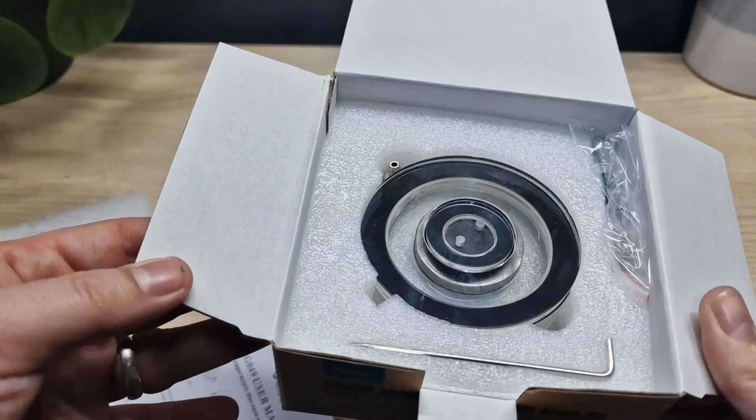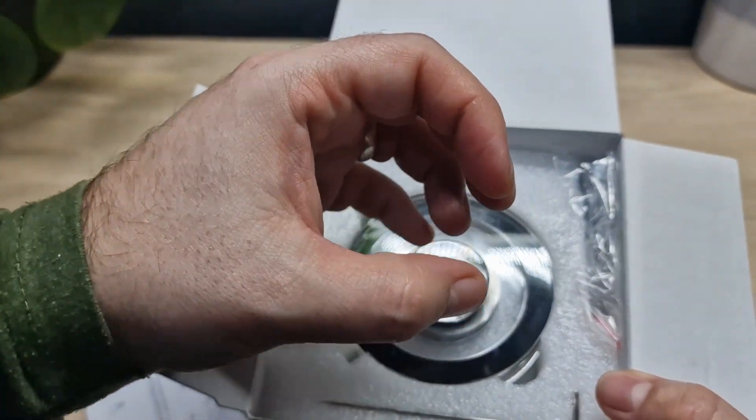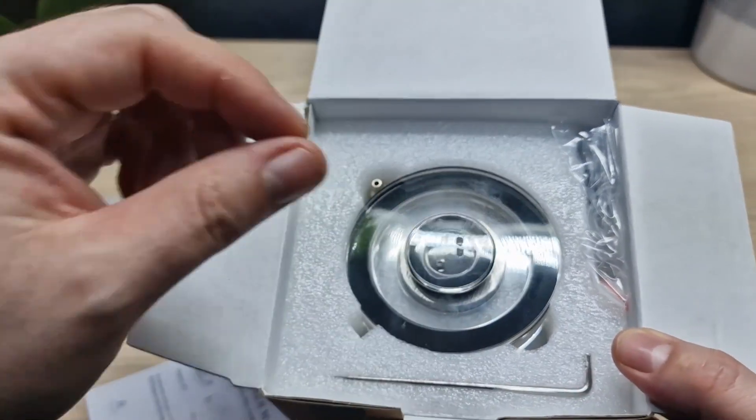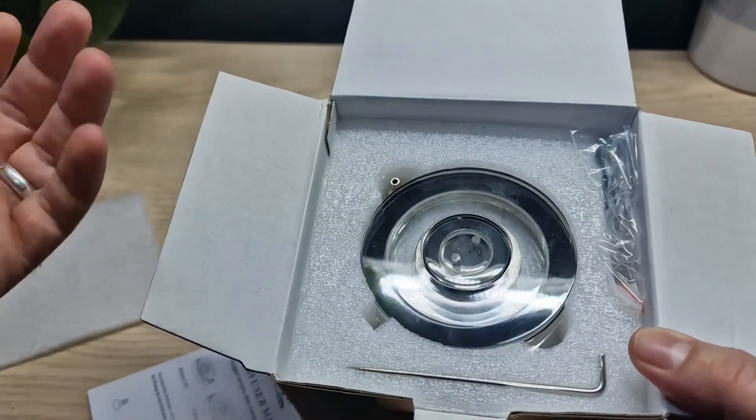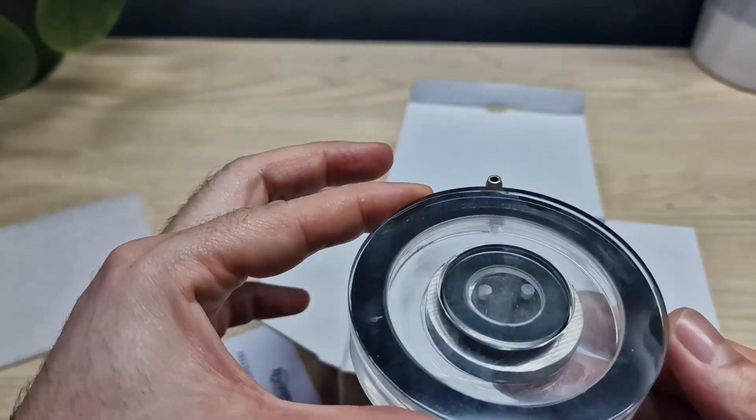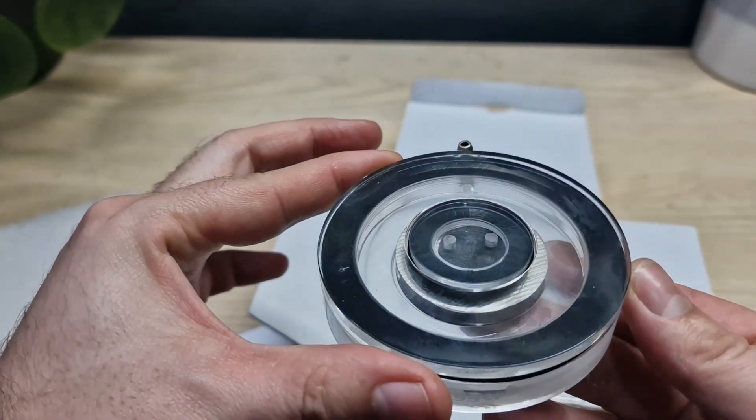If you know what a regular airstone looks like, it's usually either a large ball if you've got a pond, or a small cylinder or something similar made of a very porous hard material that lets air through. This however is not like that at all. It's got a lot of fingerprints on it so obviously it's been handled a lot by the manufacturer.